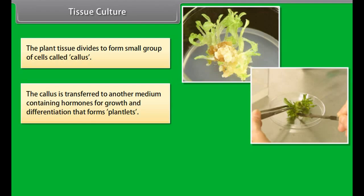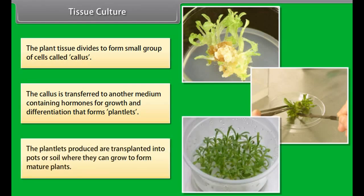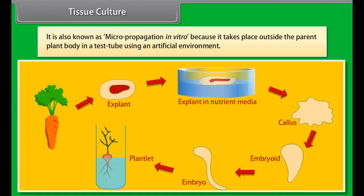In layering, adventitious roots are produced in the branch of the stem before the plant is detached from the parent plant. The branch of stem is called a layer and the phenomenon is called layering. This method is used in lemon, guava, hibiscus, bougainvillea, jasmine, raspberry, and many ornamental plants.